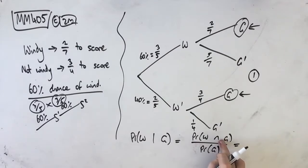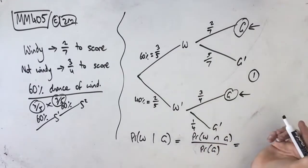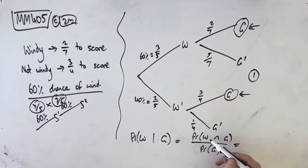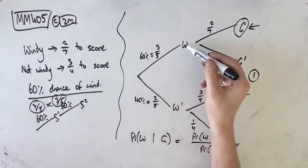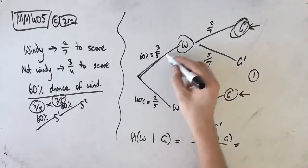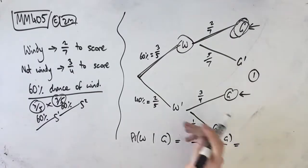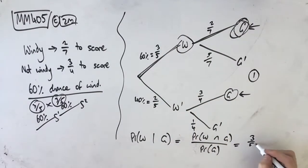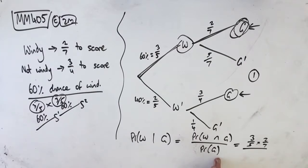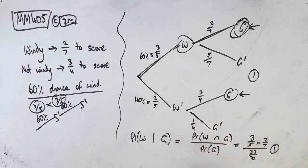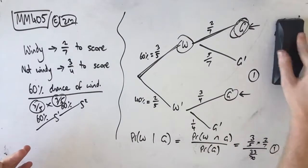The probability of W intersect G — the way to find this on a tree diagram is to look at your pathways and find the one that has W and G in it. So we find our W and our G path. The probability of that happening is 3 on 5 times 2 in 7, and that's our numerator, over the probability that he scores. In part A, the probability that he scores was 33 on 70, which is exactly what we need. So this is 33 on 70 in the denominator. This is our first mark — we've set up the equation.